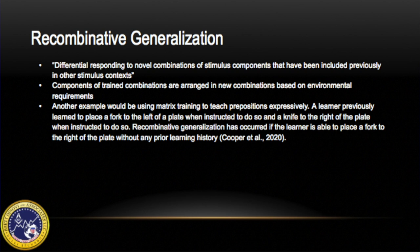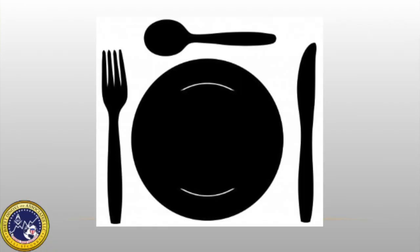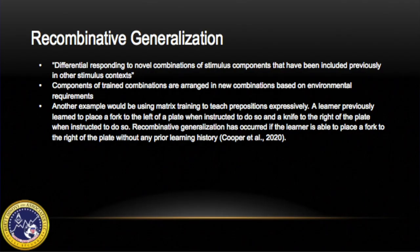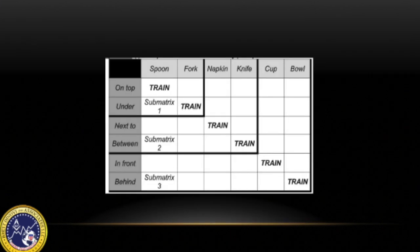Another example would be using matrix training to teach prepositions expressively. A learner previously learned to place a fork to the left of a plate when instructed to do so, and a knife to the right of the plate when instructed to do so. Recombinative generalization has occurred if the learner is able to place a fork to the right of the plate without any prior learning history. When targets are arranged in a matrix and you teach along the diagonal, skills are acquired without direct teaching, making for an efficient teaching strategy, especially given that most clinicians are pressed for time. Training down the diagonal allows for exposure to all stimuli the learner will encounter in generalization probes, making it an effective and efficient way to teach multi-word phrases without teaching every single phrase separately.